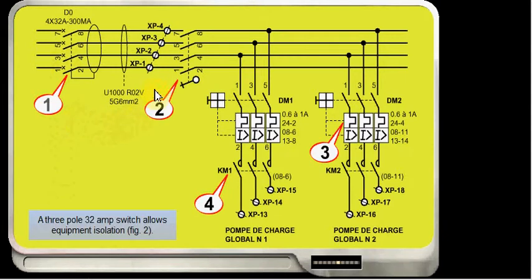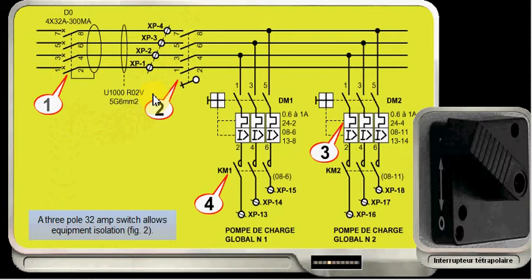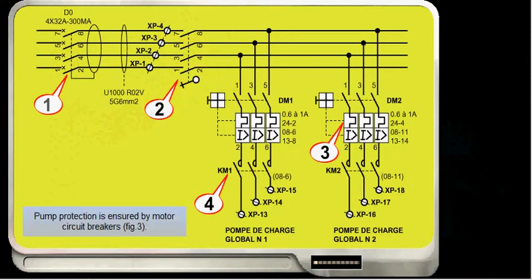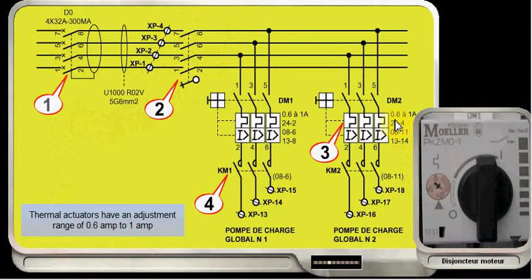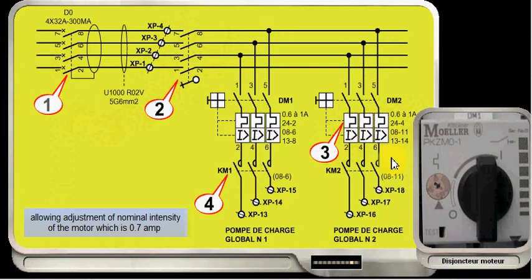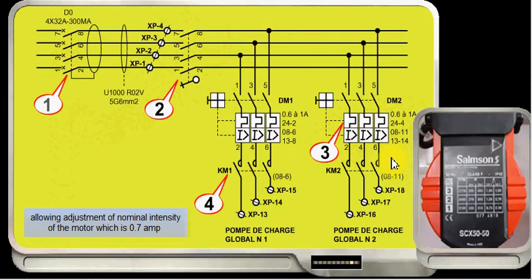The three-pole 32 ampere switch allows equipment insulation. Pump protection is ensured by motor circuit breakers number three and four. Thermal actuators have an adjustment range of 0.6 ampere to 1 ampere, allowing adjustments of nominal intensity of the motor, which is 0.7 ampere for the given reference speed.